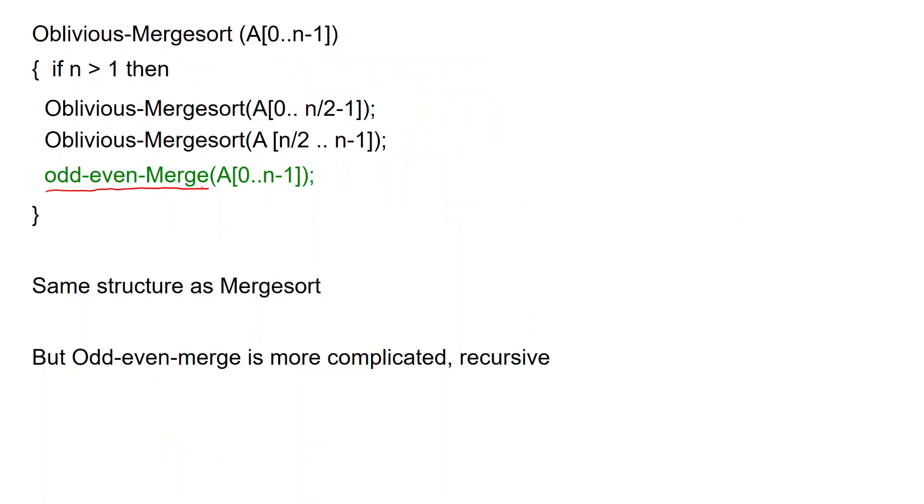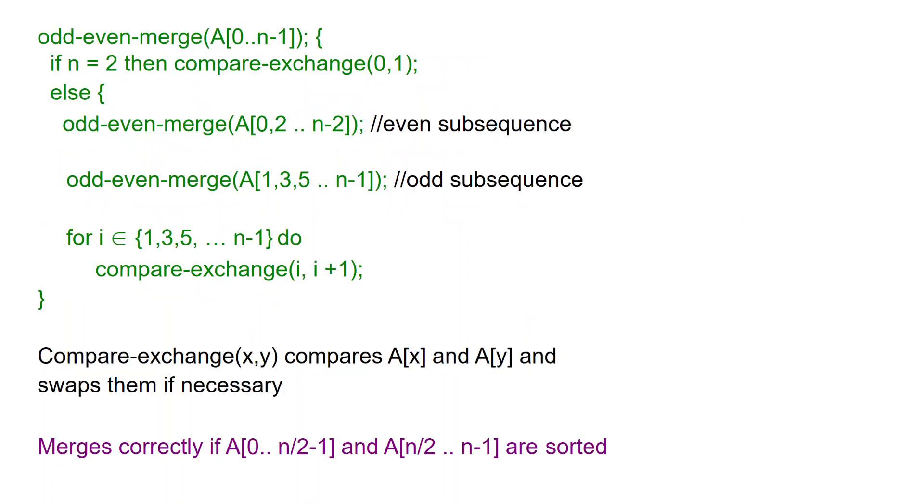which is more complicated, is recursive, but has the benefit that the comparisons and the exchanges that it makes are independent of the input. Here is how odd-even merge works. If n is equal to 2 then we are just looking at two elements so we can just compare exchange those two and we are done.